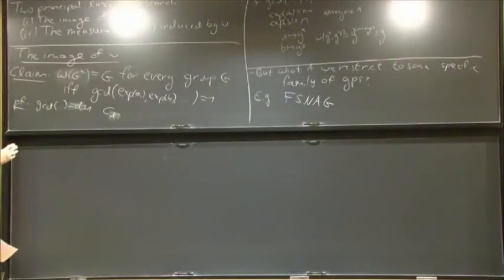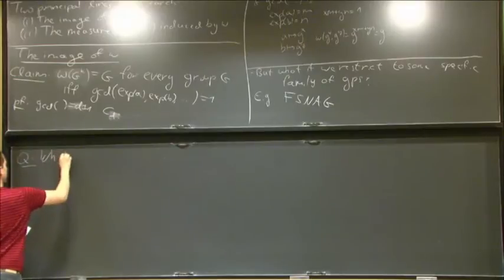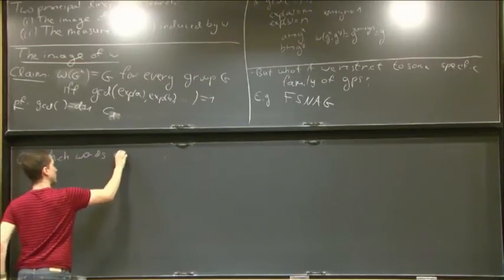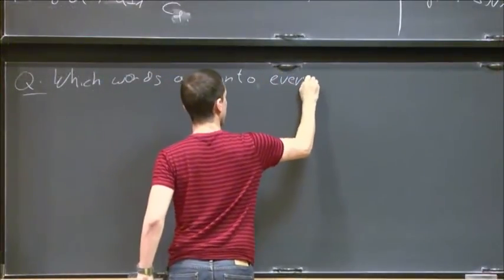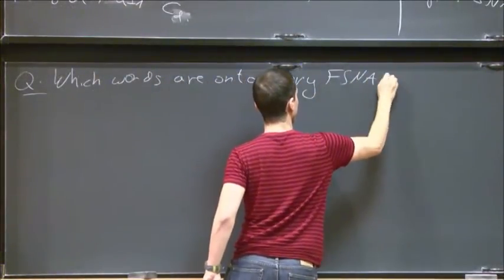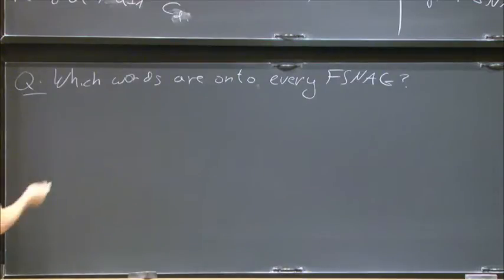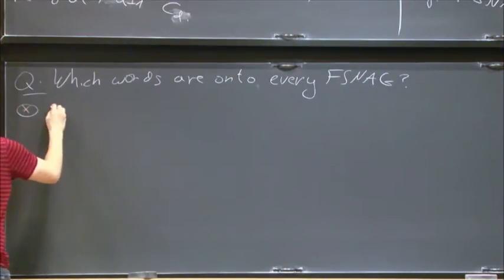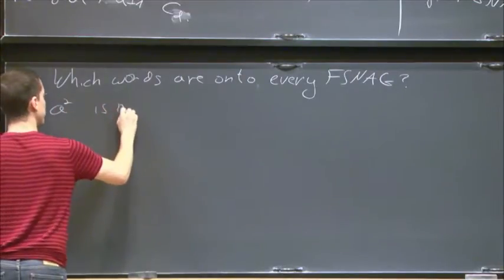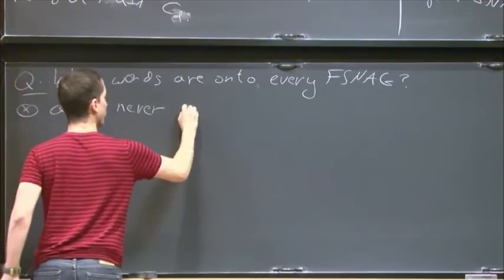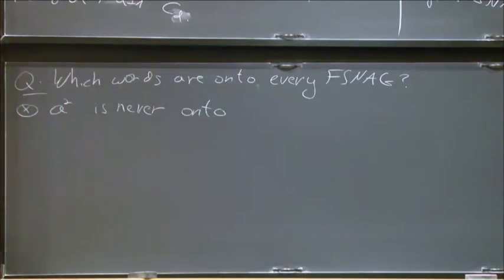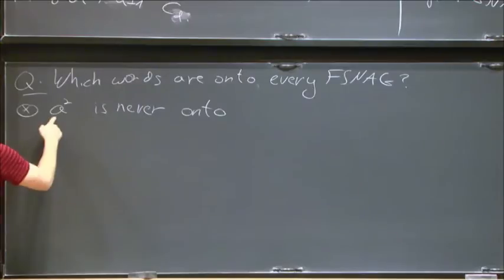The question is: which words are onto every finite simple non-abelian group? Just two things about it. The word A-squared is never onto in this case, because every finite simple non-abelian group is of even size. So A-squared is not a one-to-one function on the group.